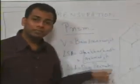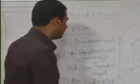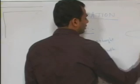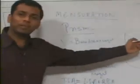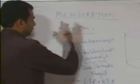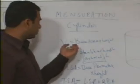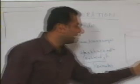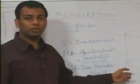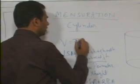In the prism, instead of taking a rectangular base, if you take a circular base, it becomes a cylinder. So cylinder is nothing but a prism with a circular base. The volume: base area into height. Since it is a cylinder, the base area is πr², and the height is h, so the volume of the cylinder is πr²h.